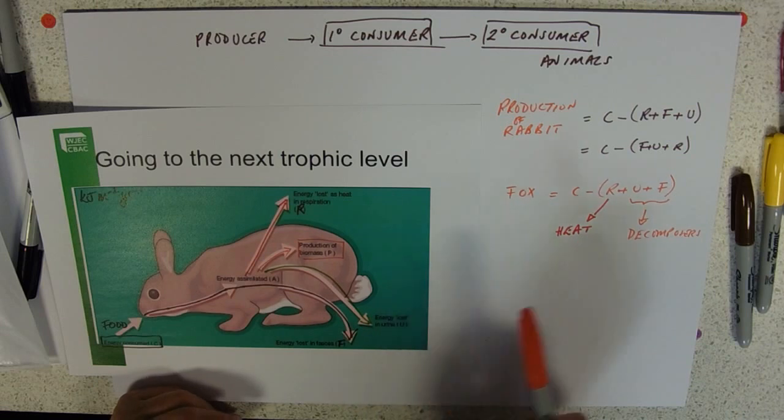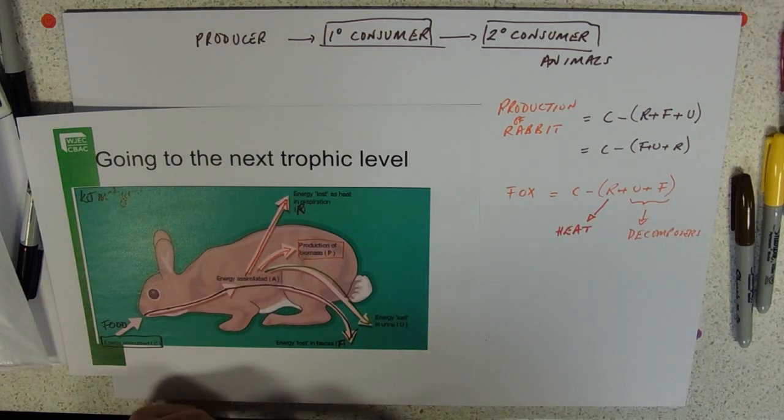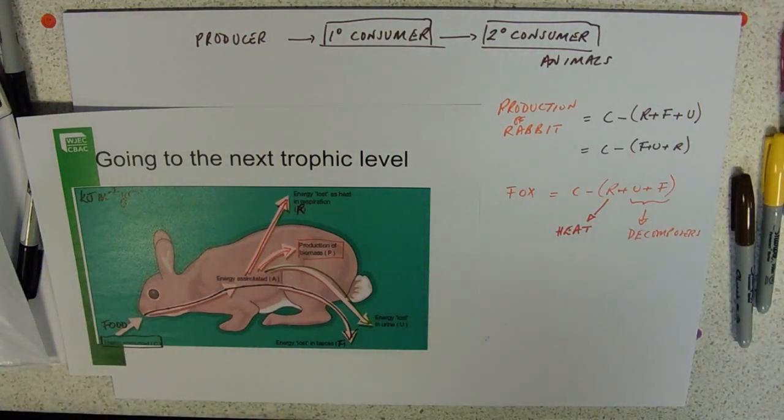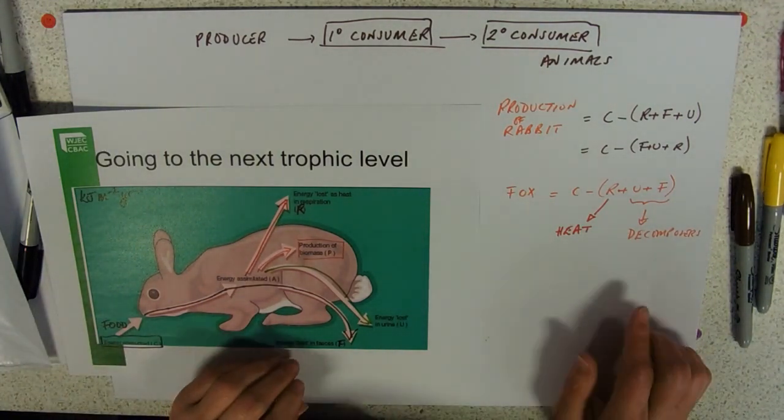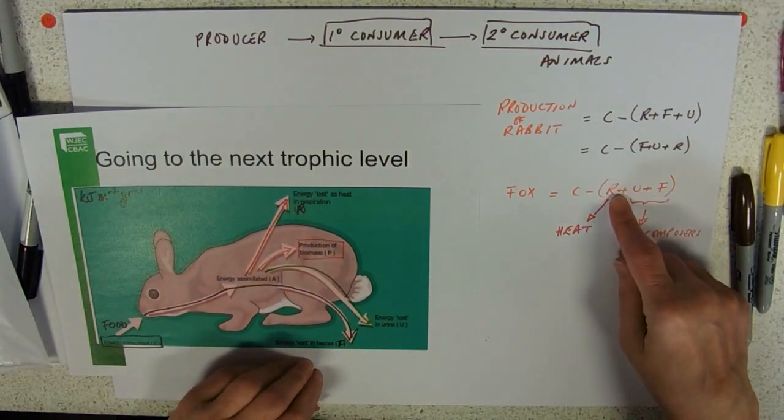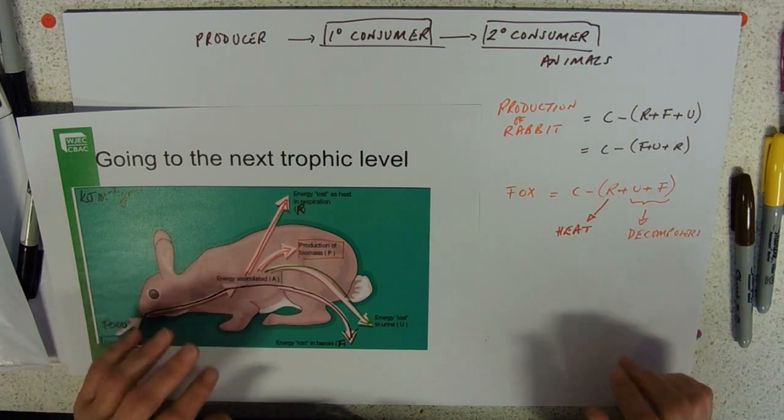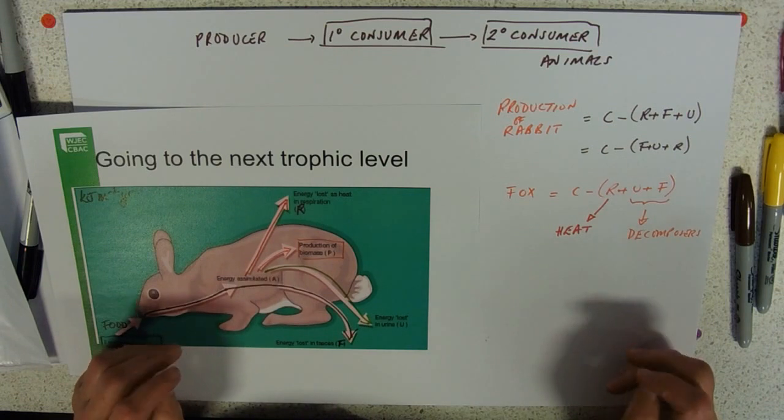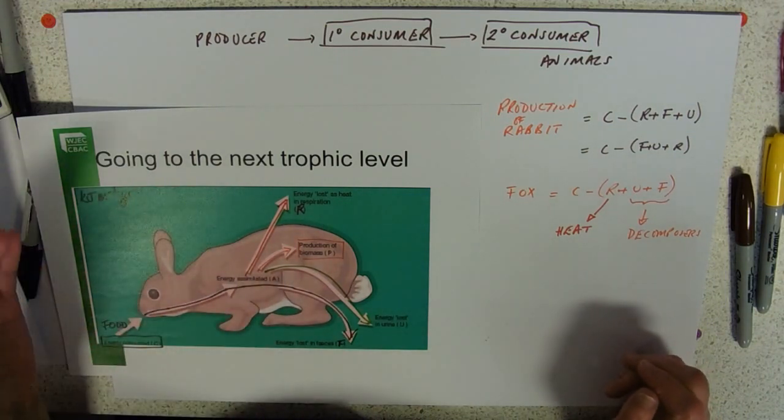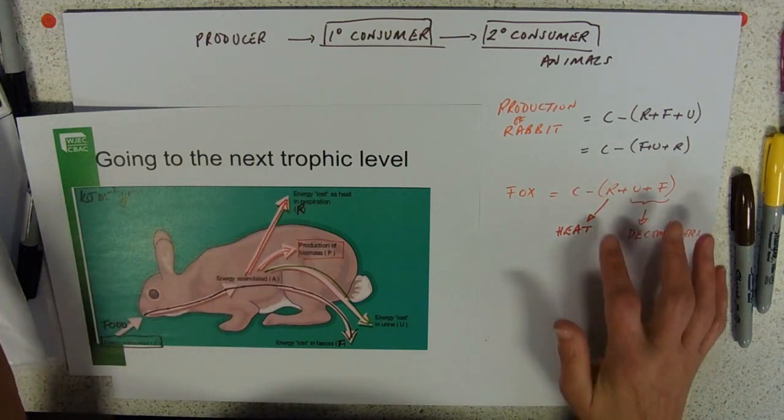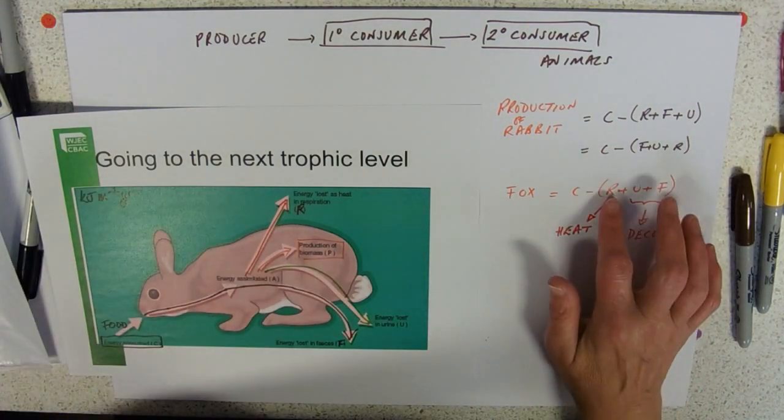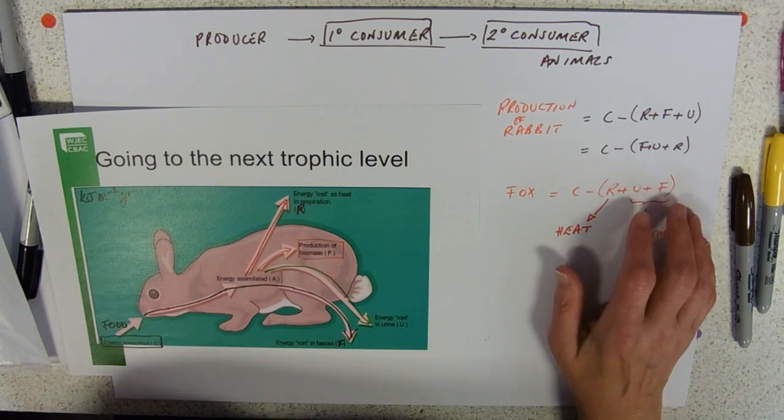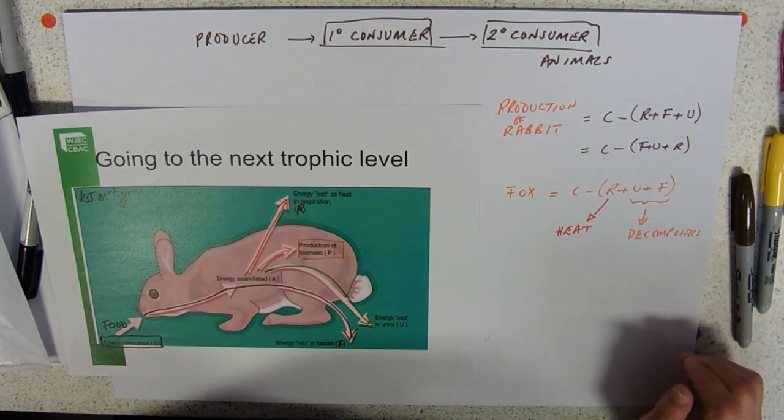There are various things that can affect the productivity. If we're thinking about farm animals, you might be looking at trying to cut down the respiratory losses by keeping it inside and warm so it's not using as much heat to keep warm. You might restrict its movement so it doesn't use up as much in jumping around. Very little you can do about urinary and faeces losses. With faeces, you could potentially feed them a more high protein diet.